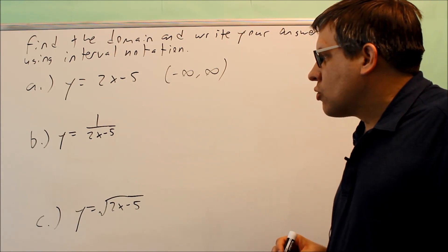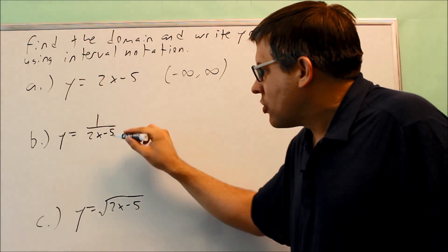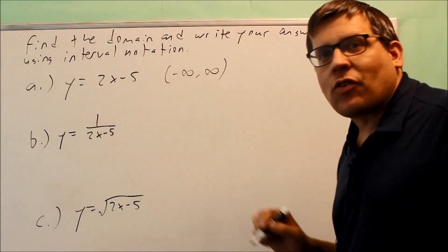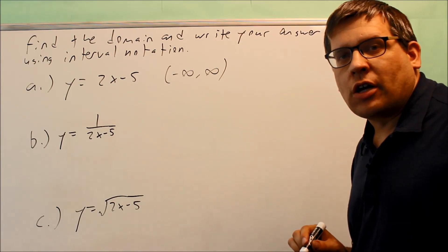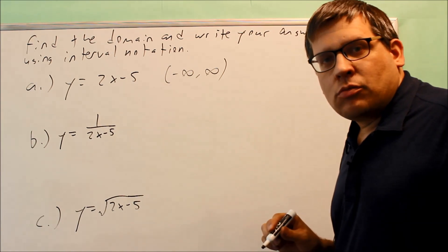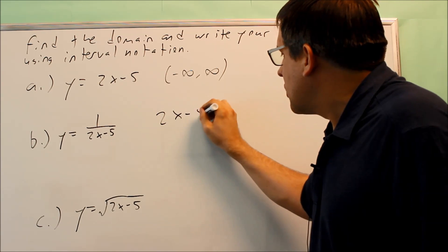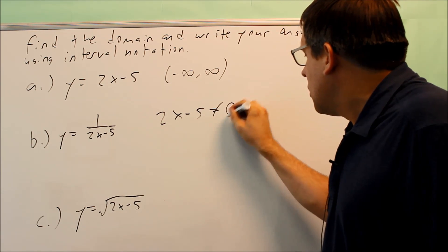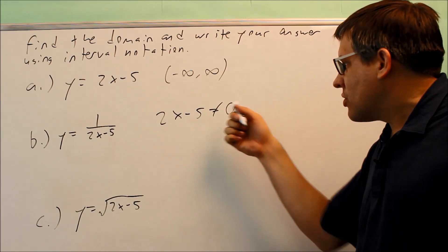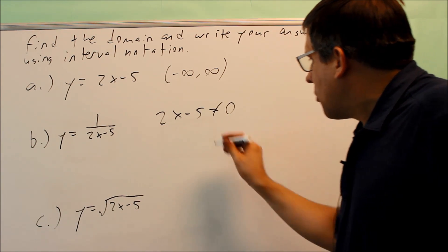Next, y equals 1 over 2x minus 5. There's a chance the denominator could equal 0 because there's a fraction. We do not want the bottom to equal 0. So what we set up is: 2x minus 5 is not equal to 0, and we solve that.